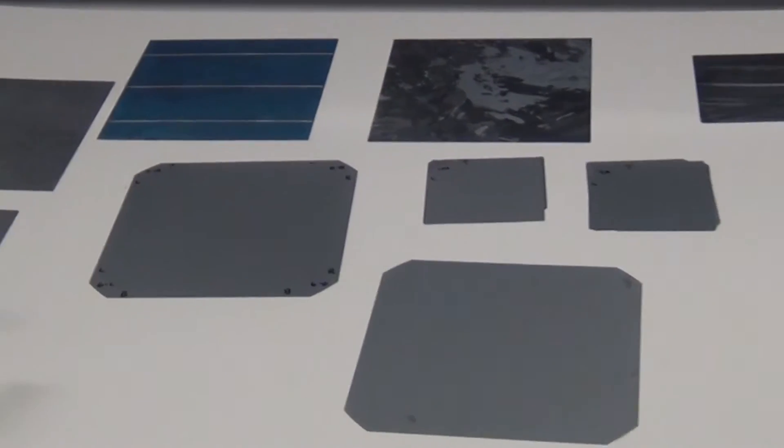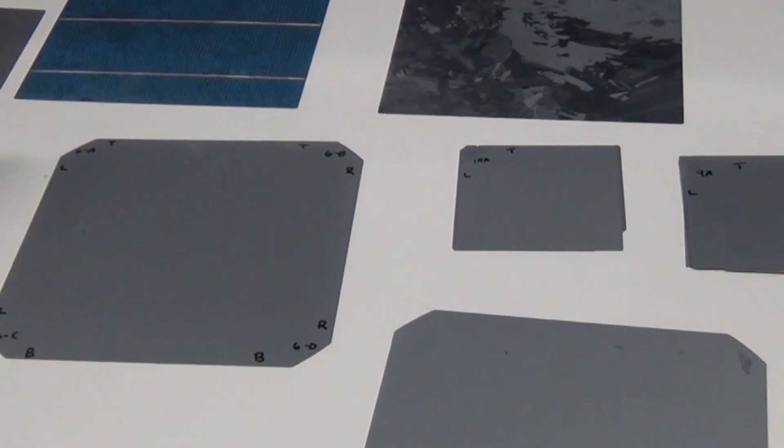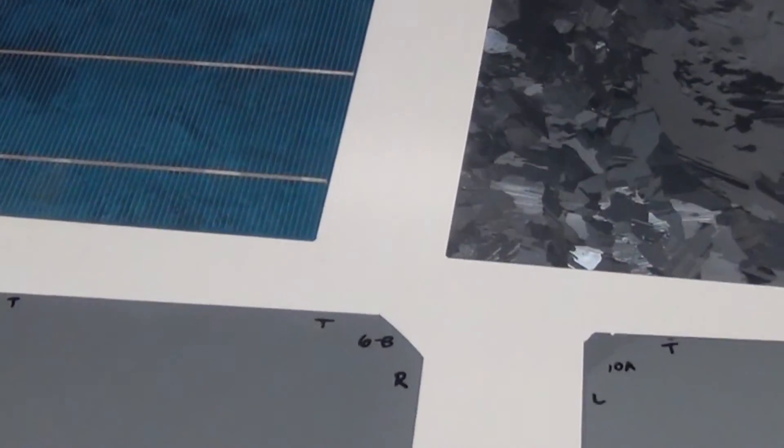The wire sawing process cuts silicon into wafers like these which are etched chemically to produce the final solar cell as seen here.